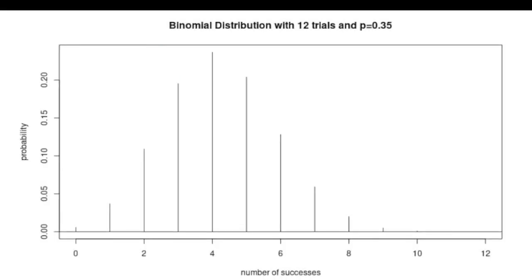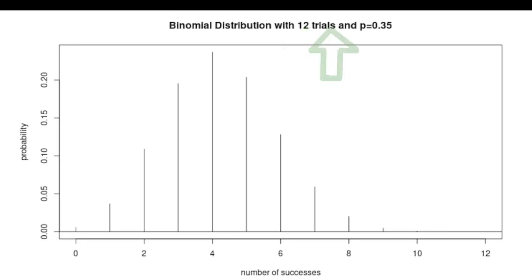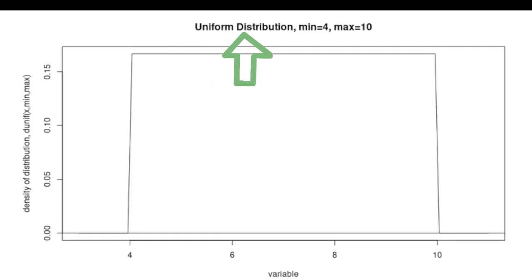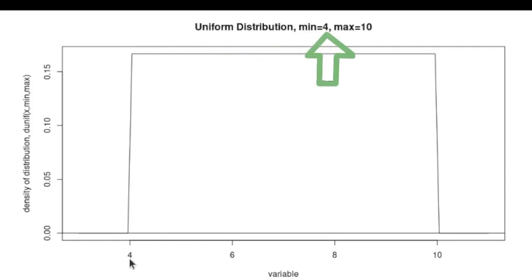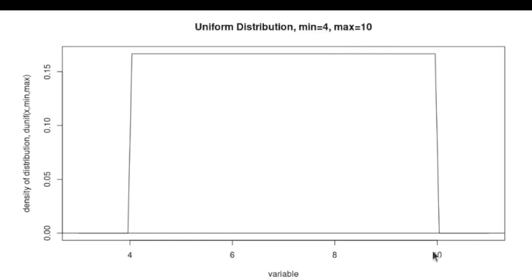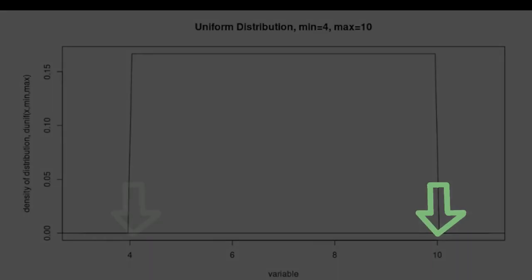The first one was a binomial distribution — here's one with 12 trials and a probability of success on an individual trial of 35%. A uniform distribution requires knowing the minimum and maximum values. In this case, it's a uniform distribution with a minimum of 4 and a maximum of 10.